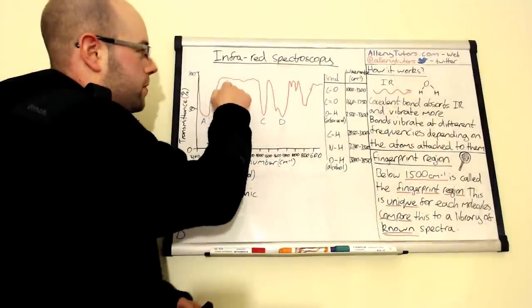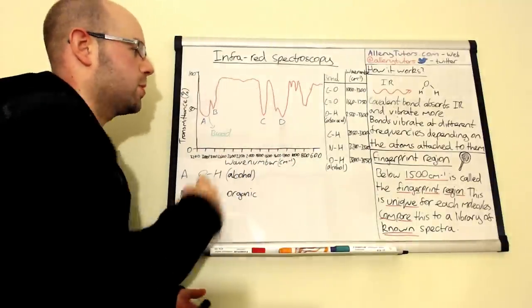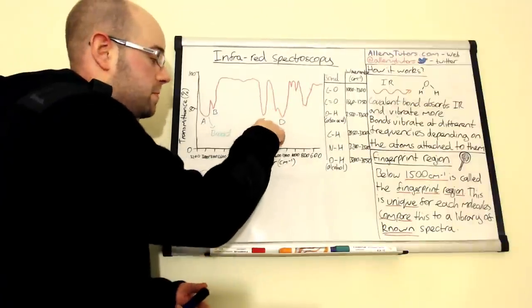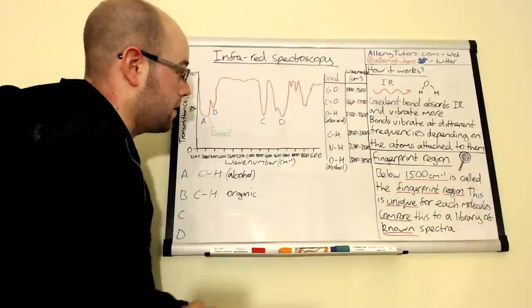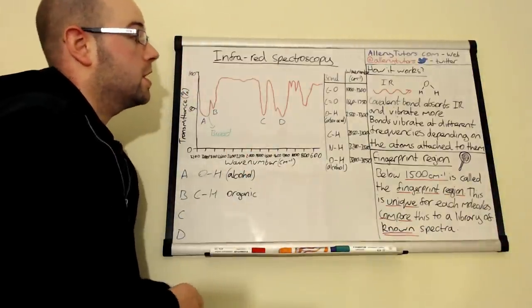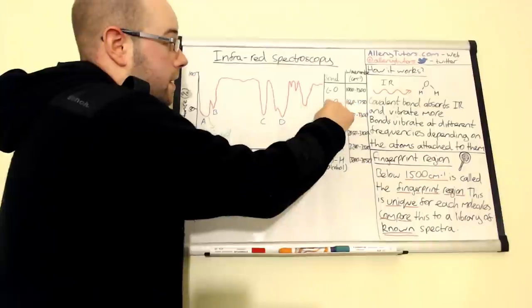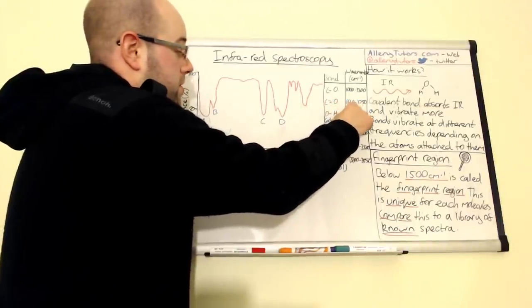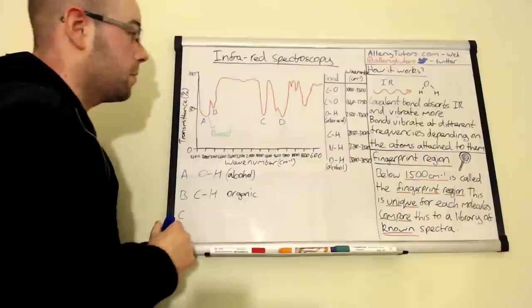Okay, if we come on to the next one, we've got some peaks here but these are quite small and insignificant so we can just ignore them. The next biggest peak here is peak C. Now peak C you can see is occurring about the 1700 mark, 1600. So if we compare that in here you can see that actually it fits in with this group here. So 1600 is a C double bond O group.